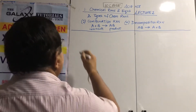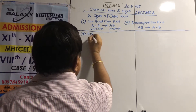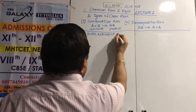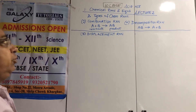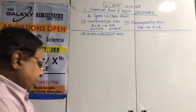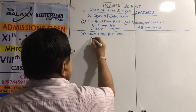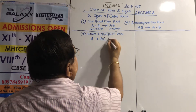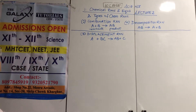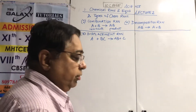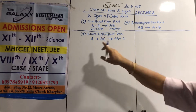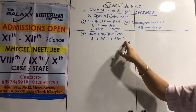Now the third type: displacement reaction. In displacement reactions, A reacts with BC to give AB and C. We have changed partners — one element displaces another. One reacts with the compound, takes the place of an element in it, and that element is set free.